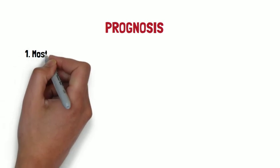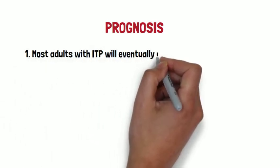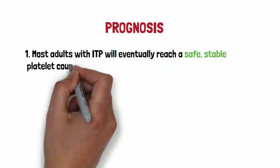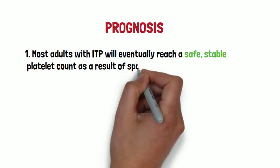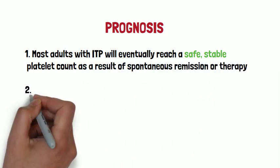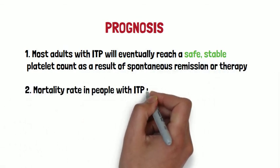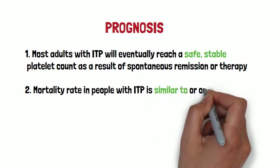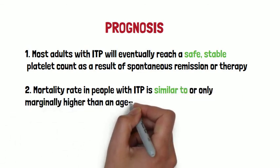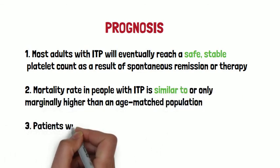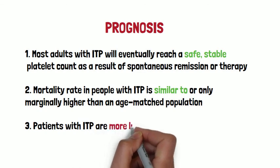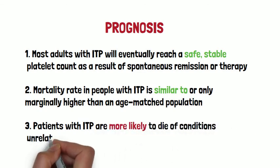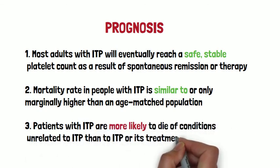Now let's talk about prognosis. Most patients with ITP will eventually reach a safe, stable platelet count as a result of spontaneous remission or therapy. Mortality rate in people with ITP is similar to or only marginally higher than the age-matched population. Patients with ITP are more likely to die of conditions unrelated to ITP than to ITP or its treatment.